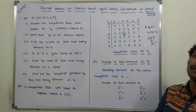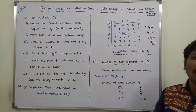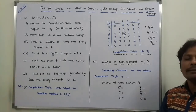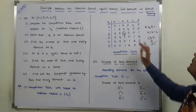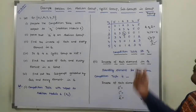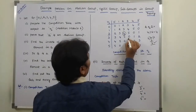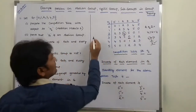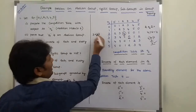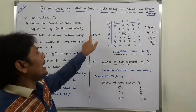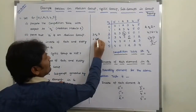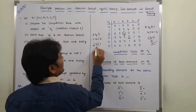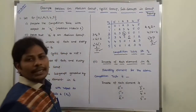After performing the addition operation with the corresponding row element and column element, whatever result we are getting, we perform the modulo 6 operation on it. Whatever remainder we get, that remainder is the entry. For example, row 3 and column 3: 3 + 3 = 6, and 6 modulo 6 = 0. So this value is 0.